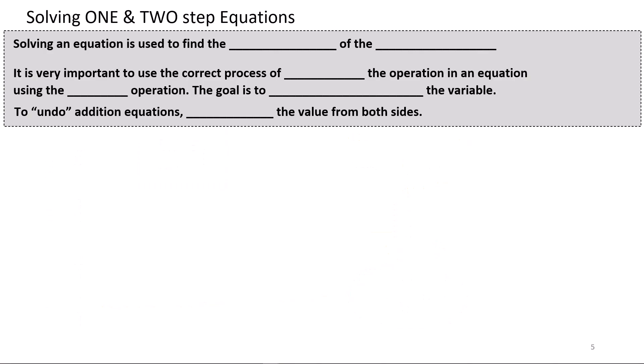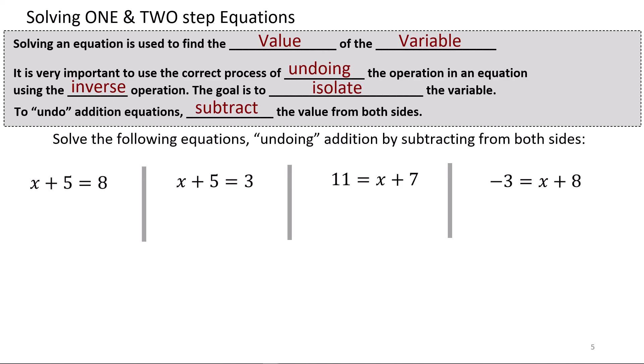Solving 1 and 2-step equations: solving an equation is used to find the value of the variable. It is very important to use the correct process of undoing the operation using the inverse operation. The goal is to isolate the variable. To undo addition, the inverse operation is subtraction — we subtract the value from both sides. Solve the following equations by undoing addition by subtracting from both sides.